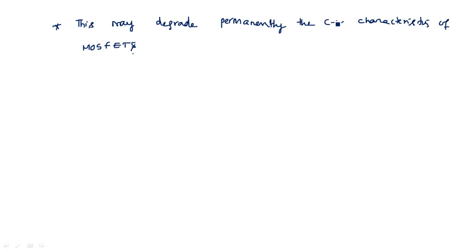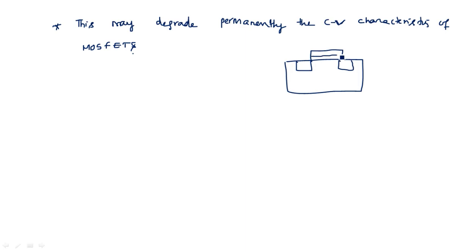CV refers to the capacitance charging and discharging due to the internal effects of the transistor — basically charge and voltage characteristics. In the MOSFET structure, the hot electrons change the properties of the gate material. The gate is polysilicon, below it is the oxide layer, and below that is the substrate — so capacitance action exists between the polysilicon and the substrate with the oxide in between. This capacitance charging and discharging will be affected because of hot electrons, and so the charge-voltage characteristics may be affected. Thank you.